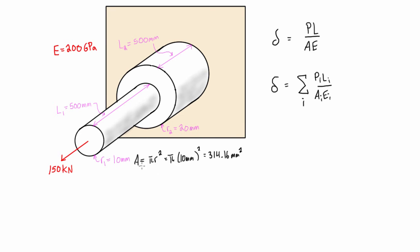For area two — the larger section — the cross-sectional area is πr², so we get π times 20 millimeters squared, and that gives us 1,256.64 millimeters squared.